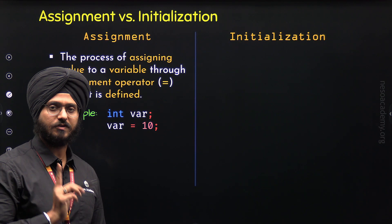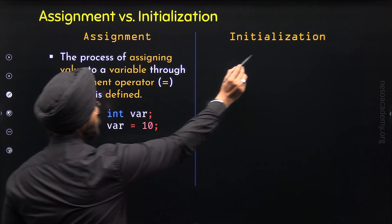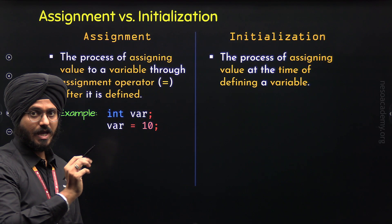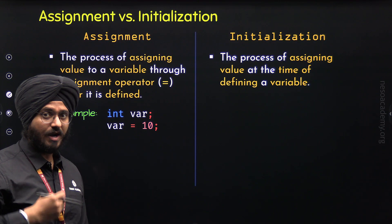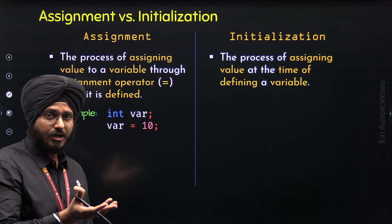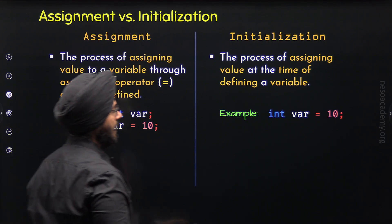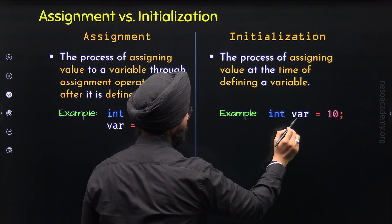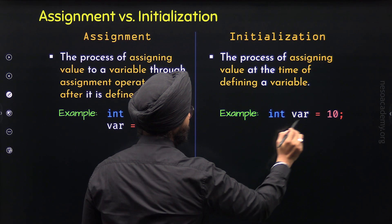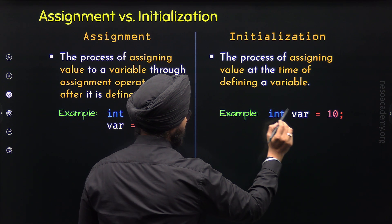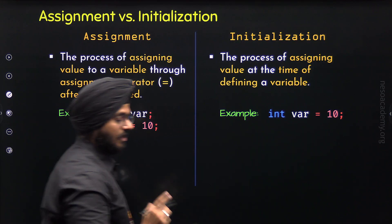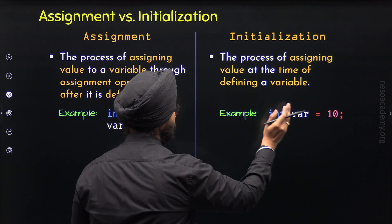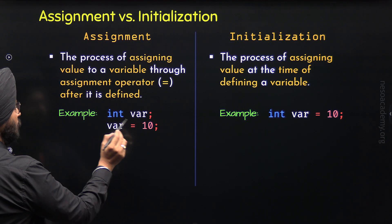Now let's move to Initialization. Initialization is the process of assigning value at the time of defining a variable. When we define a variable and provide an initial value to it at the same time, we call that process Initialization. For example, here I have defined variable var and at the same time assigned the value 10 to it. So here I am initializing this variable with value 10.